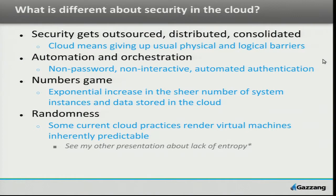This sounds a little at odds with one another, but not only is it distributed, but in some cases it's consolidated. So you've managed to get everything now into a single cloud provider, but they have a breach, but they have some endemic issues that totally jeopardizes security. You've now centralized it. So it's kind of that weird combination of outsourcing, distributing, and consolidating in some cases. Ultimately, you've given up some of your usual physical barriers to your infrastructure.